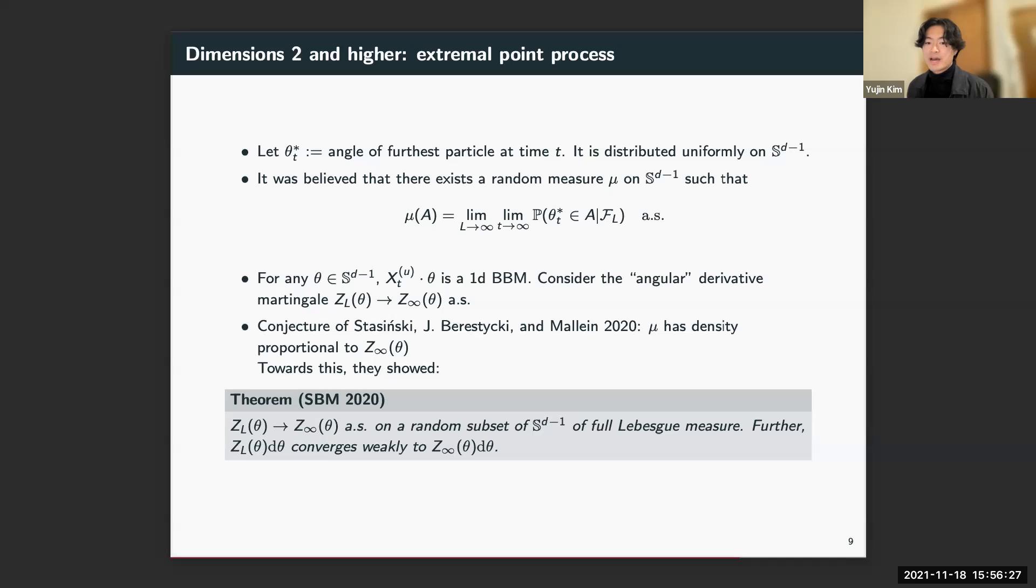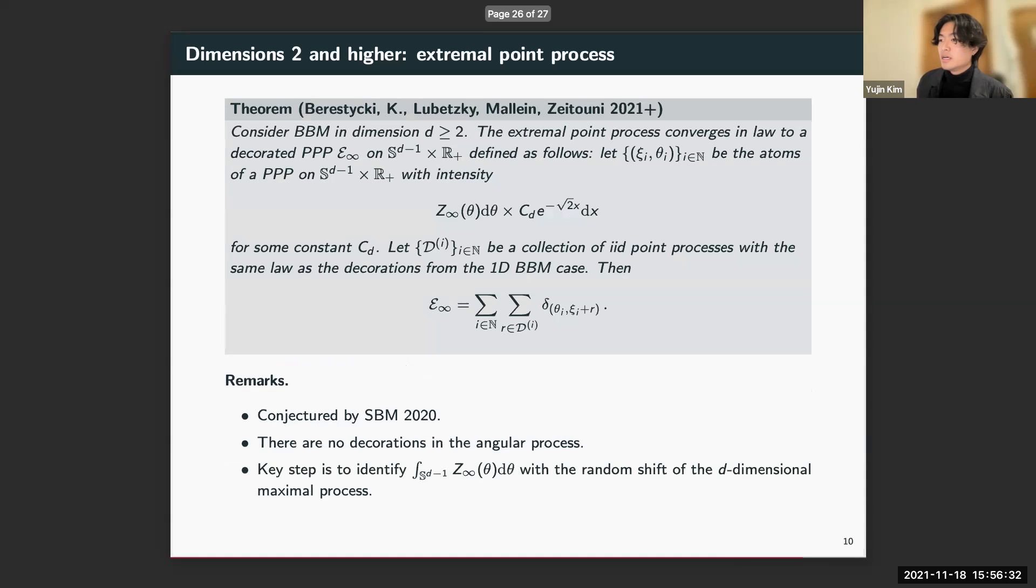With this background, I can now state the full convergence results for the extremal point process. This is joint work with Al, Ofer, Julien Berestycki, and Bastien Mallein. We considered the point process via its polar decomposition: angle and radius. This is a point process on the sphere times R^+.